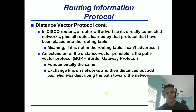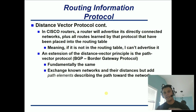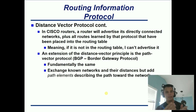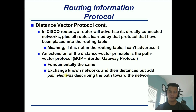An extension of distance vector protocols is actually the path vector protocol. Some people believe that BGP is a path vector protocol period — there's no such thing as BGP being a distance vector. However, it is fundamentally the same. They don't exchange all of the link states the way OSPF does. All BGP does is say: you know this network, how far is it, what interface do you go out of? And then there's an extension where they actually exchange path elements — that's the only extra stuff that BGP will send versus what RIP will send.